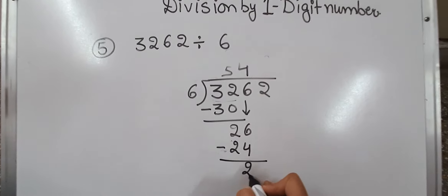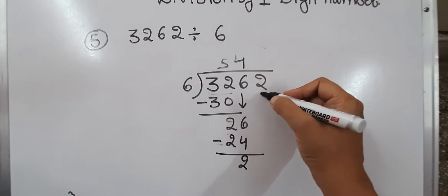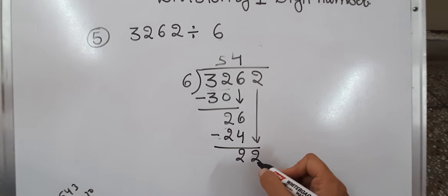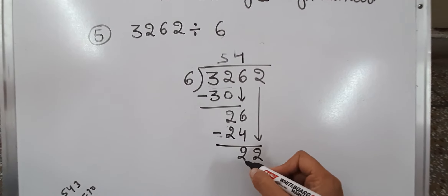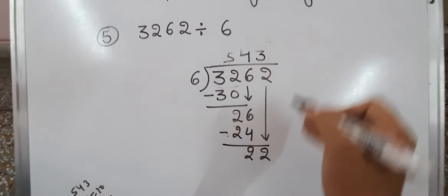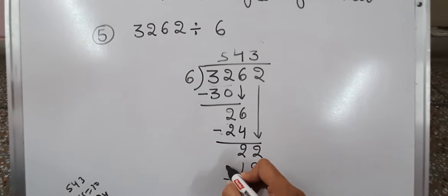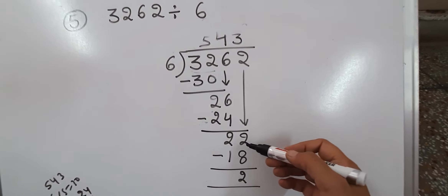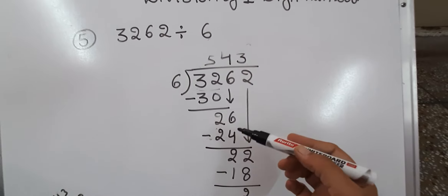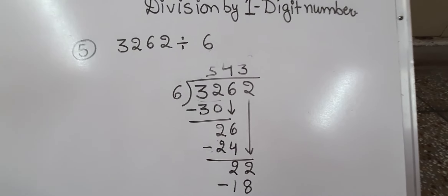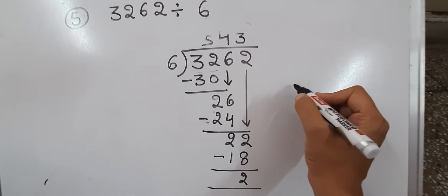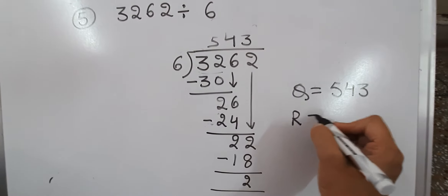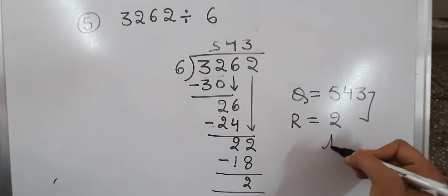When we subtract we get remainder 2. We bring down the next digit, making 22. In the table of 6: 6×3 is 18, which is just smaller than 22. We subtract and get remainder 2. Now 2 cannot be divided by 6. So the quotient is 543 and the remainder is 2.